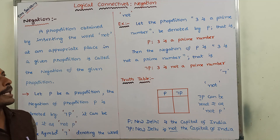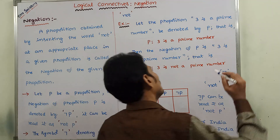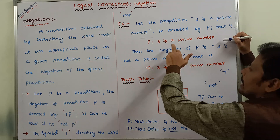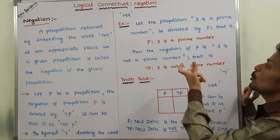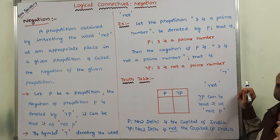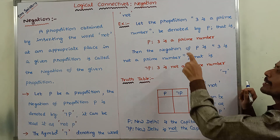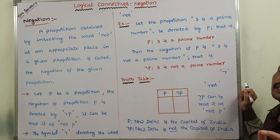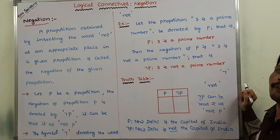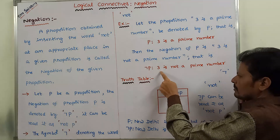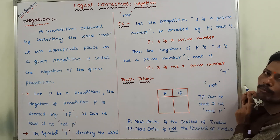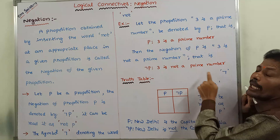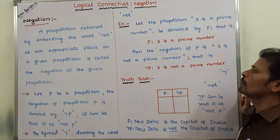Now let us consider another example. We take the proposition: 'Three is a prime number,' denoted by P. To get the negation of this proposition, we simply insert the word 'not' at an appropriate place, giving us: 'Three is not a prime number.' This is the negation of the given proposition.